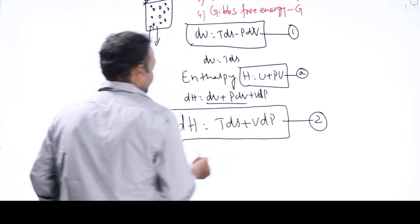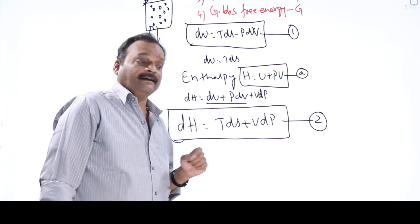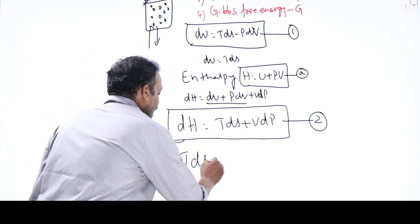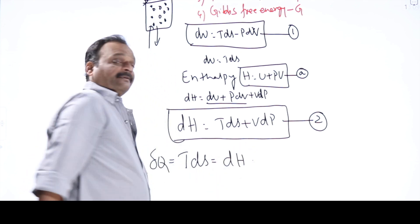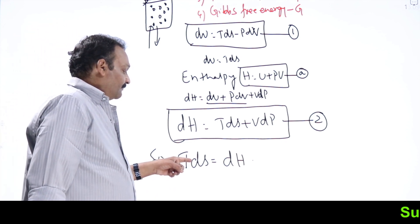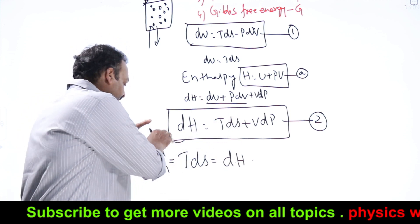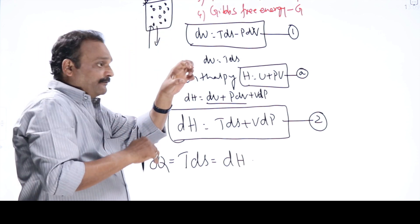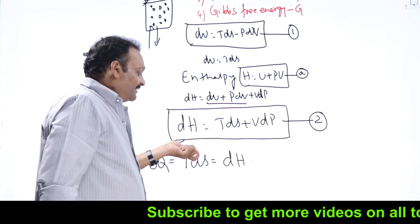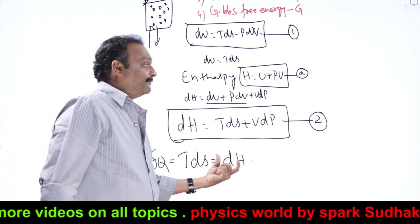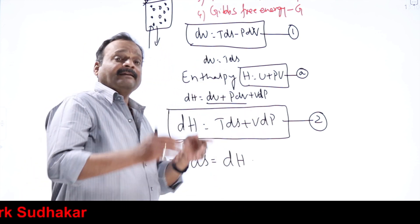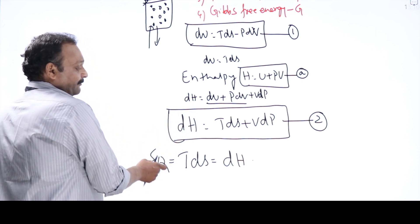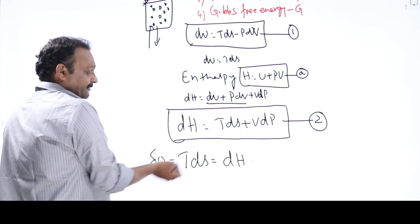What is the significance of enthalpy? Consider a reversible isobaric process — pressure remains constant, so dP equals zero, meaning V dP equals zero. Therefore T dS, which is nothing but delta Q, equals dH. Whatever heat you are giving to the system, enthalpy increases by the same amount. Whatever heat you are taking out, enthalpy decreases by the same amount. For example, you give 10 joules of heat — system's enthalpy increases by 10 joules; you take out 15 joules — enthalpy decreases by 15 joules.